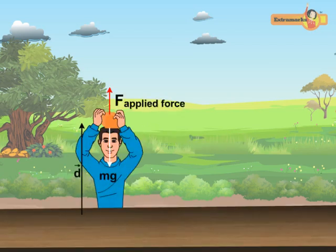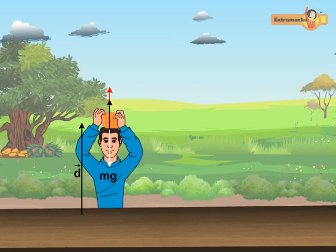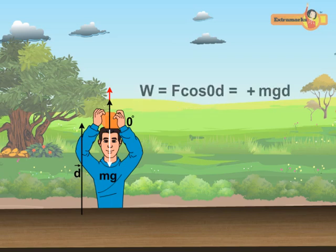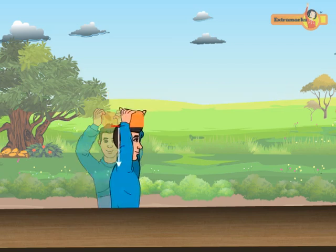To lift the block, the boy applies a force in the upward direction, greater in magnitude than the weight mg of the block. The displacement of the block is also in the upward direction, so the angle between the applied force and displacement is 0 degrees. Hence, the work done is the product of the applied force and the displacement, and the work done in this case is positive.